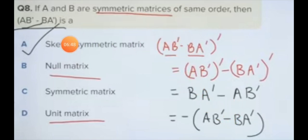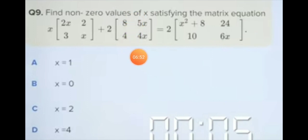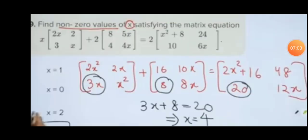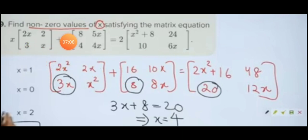Now find the non-zero values of x satisfying the matrix equation. This is a matrix equation, so just do the calculation. Multiply the matrices: 2x times 3 plus 2 times 4x squared equals the right side. Simplifying this equation gives us 6x plus 8x squared on the left side, which must equal the corresponding elements on the right.